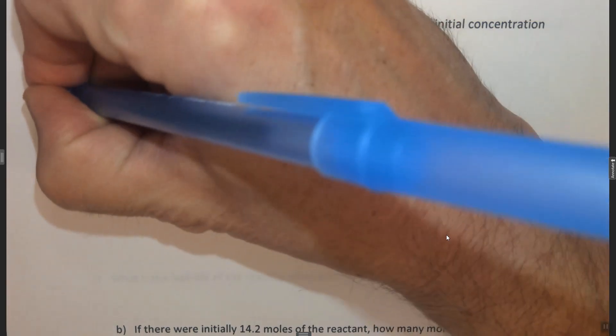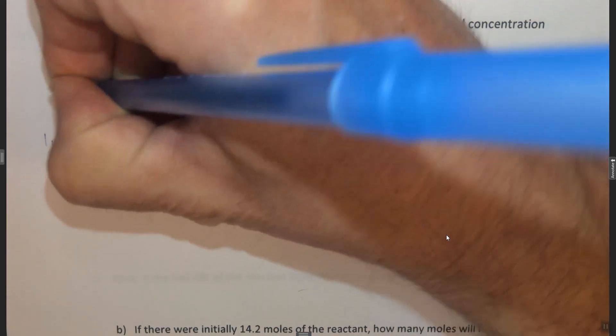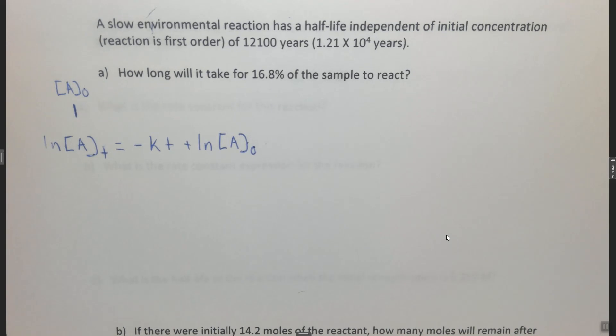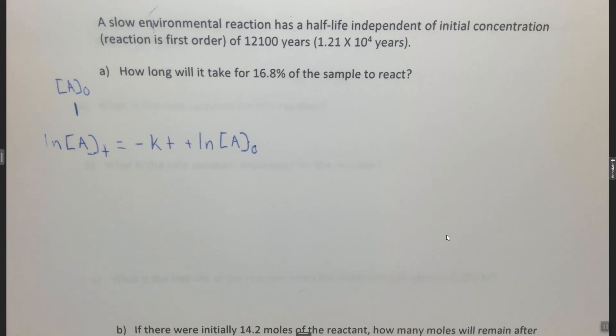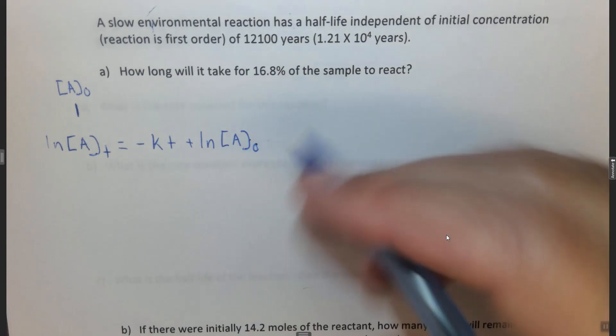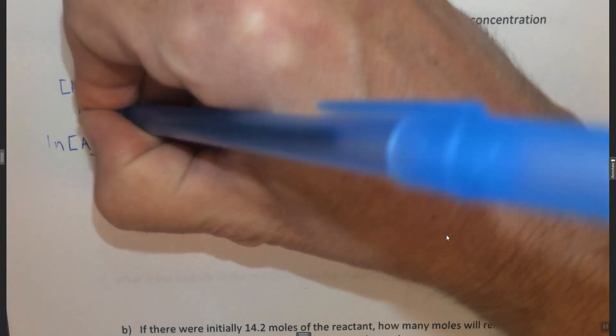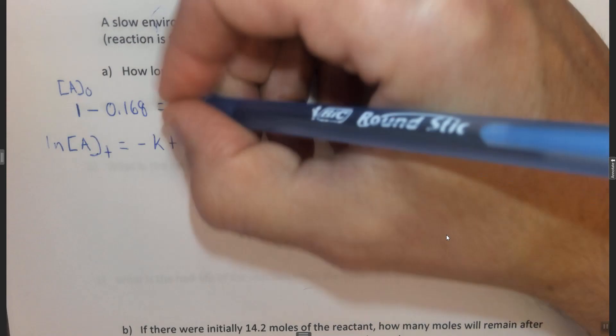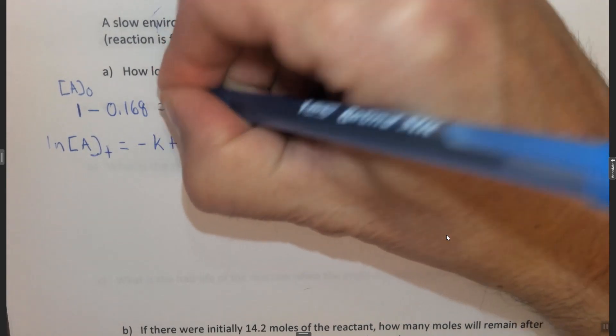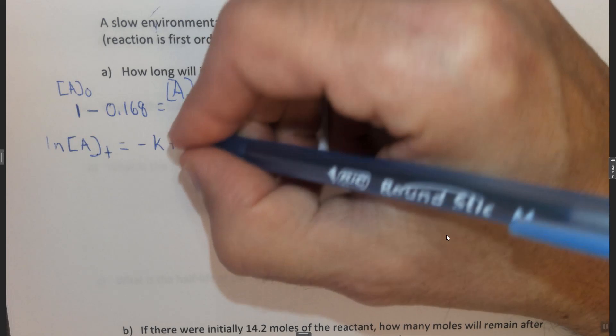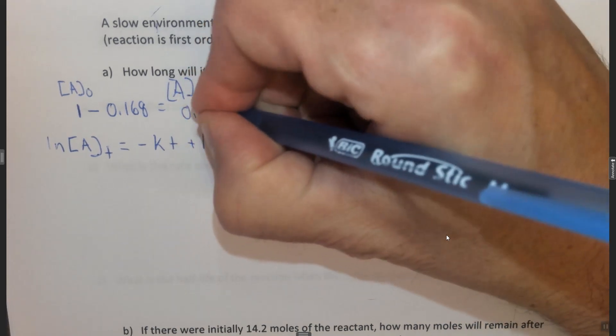Specifically, we're going to call the initial concentration of A as 1. If you want to use 100, that would work too. 100% or just 1. We now want to lose 16.8%, so we subtract out 0.168. If we lose 16.8%, that means the concentration of A after some time should be 0.832.